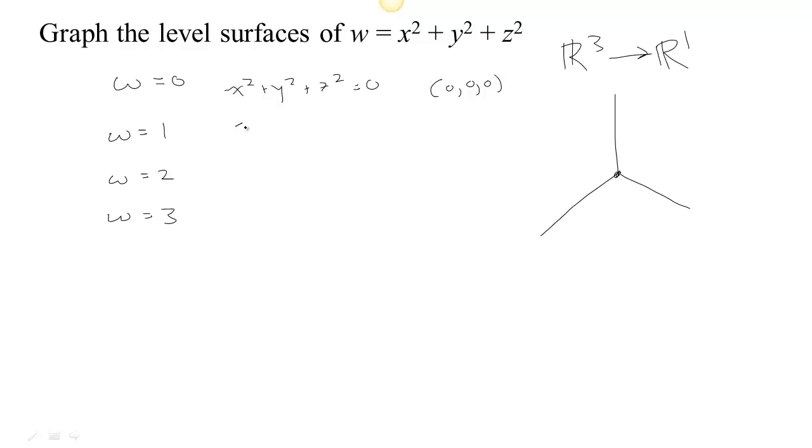And then when w equals one, we have x squared plus y squared plus z squared equals one, which is a sphere of radius one. So let me just draw a sphere of radius one centered at the origin here. Here's our sphere. So here's w equals zero and the w equals one level set is a sphere around that.